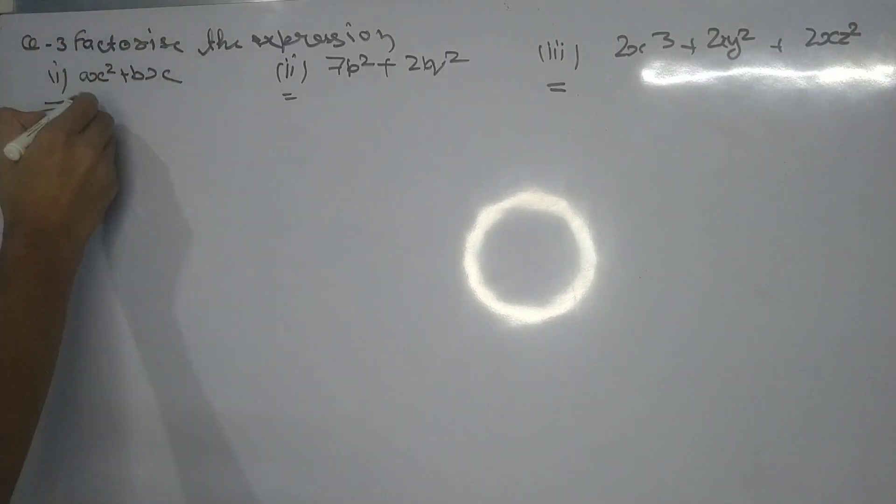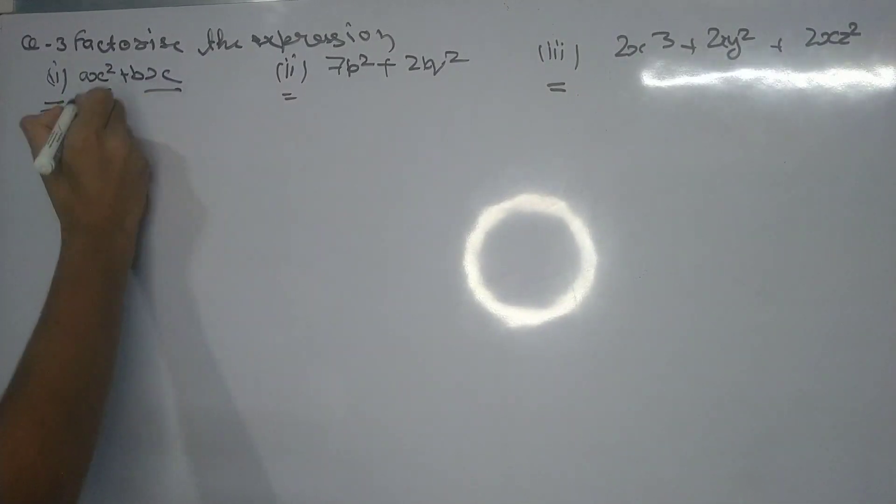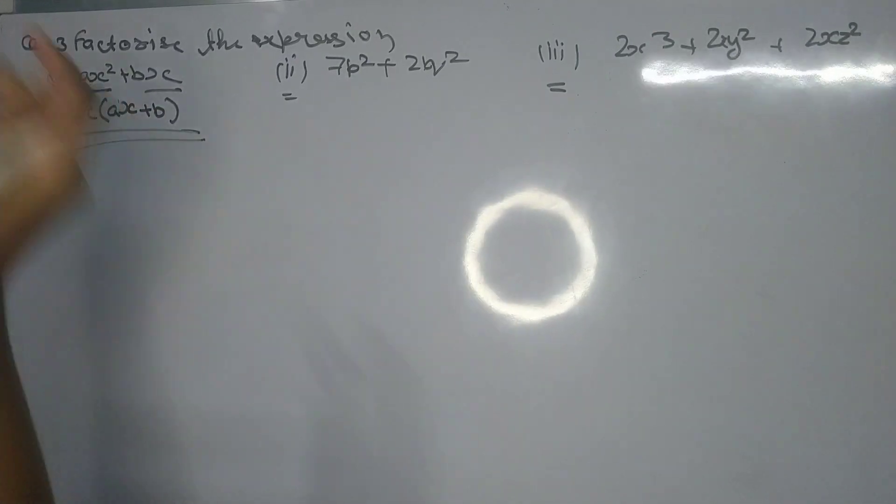In part (i) we have ax squared plus bx. The x is common here, so we will write the common factor outside and then write the equation inside a bracket. That's all for this part.